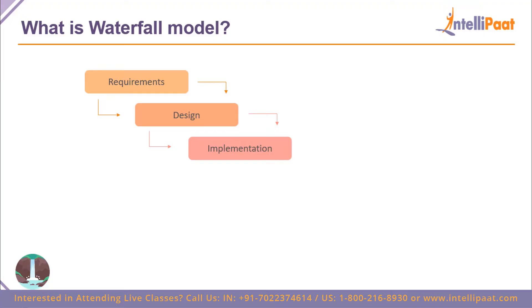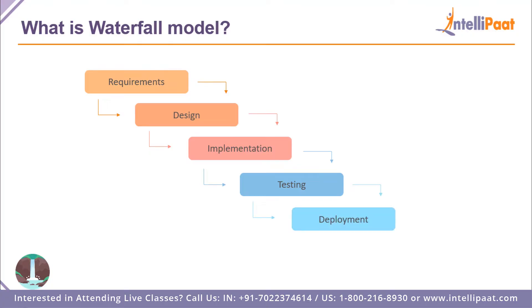Then comes testing, where all the test scripts are run on the code and the software components that have been created are tested. After that is the deployment phase, where the application is deployed onto a production, testing, or staging environment. Finally comes the maintenance phase, where once the product has been deployed, it is monitored and maintained. With this particular model, you can develop multiple components of the software simultaneously — different teams can work on different components at the same time.